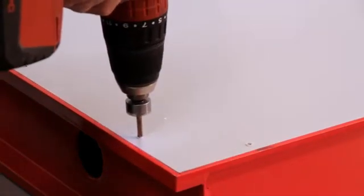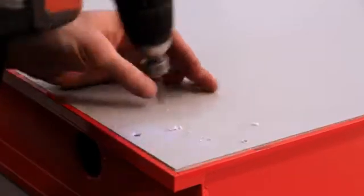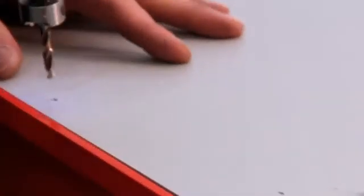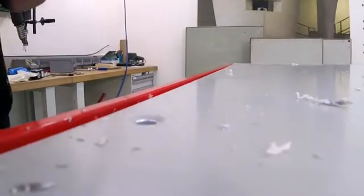Holes are then drilled into the Alcus panel and the formwork for riveting. To ensure the rivet is flush with the Alcus, it's countersunk using a 120 degree countersink.